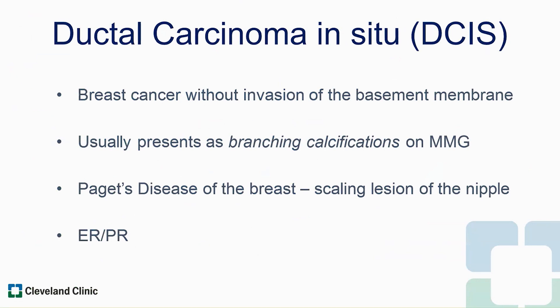Ductal carcinoma in situ — let's go over this first. This is stage 0 breast cancer, meaning it has not invaded through the basement membrane. It usually presents as branching calcifications on a mammogram. Paget's disease of the breast is actually DCIS of the nipple. It presents as a scaling lesion of the nipple — almost like nipple crusting — where someone notices flaking of their nipple that doesn't seem to go away when they wash it.